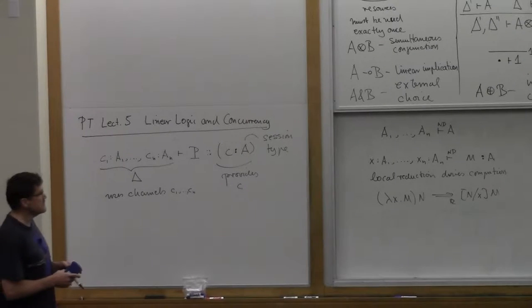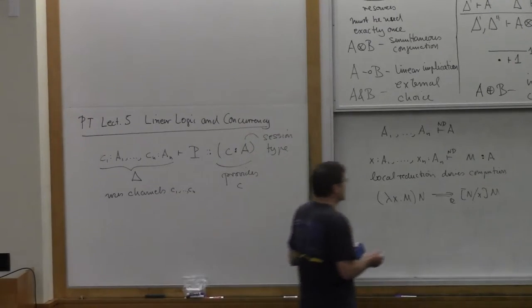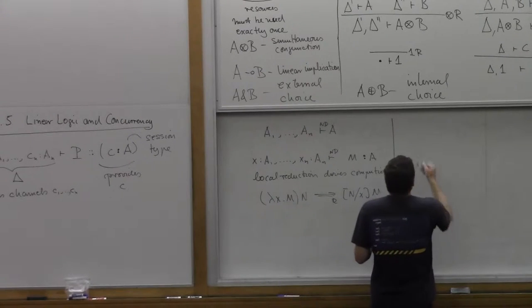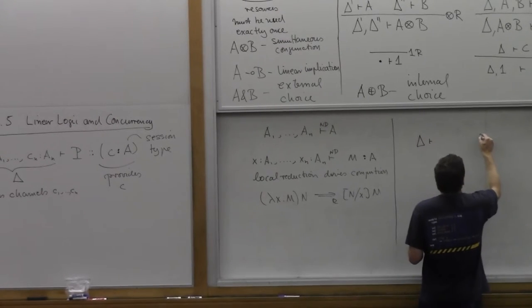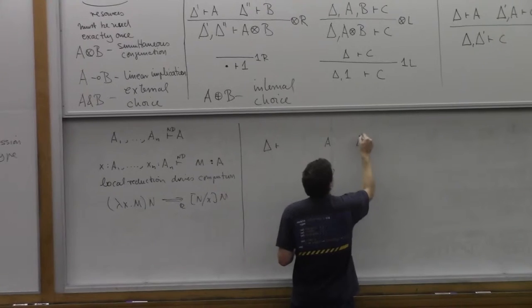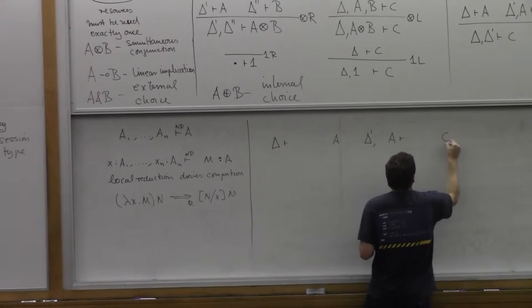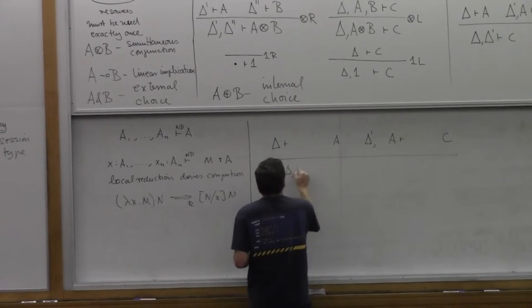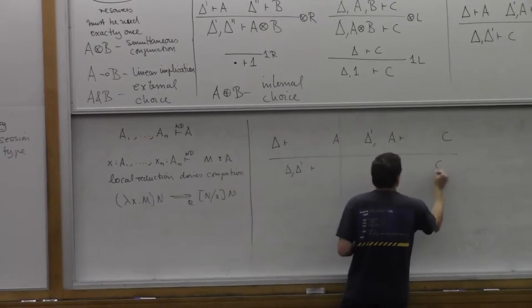So let's start with cut, because cut is part of the key of this. It's very important to understand the notion of a cut. So we write the cut rule again. We have delta and we have A, and we have delta prime together with A, and we have C. And then in the conclusion, we have delta together with delta prime, and we have C.